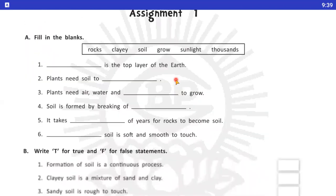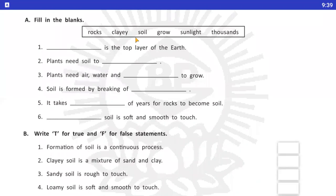Question Number 1 is, fill in the blanks. Number 1, dash is the top layer of the Earth. Earth ki top layer kya hoti hai? Answer is, soil. Number 2, Plants need soil to dash. Plants ko soil ki jaroorat kisliye hooti hai? Grow karne ke liye.